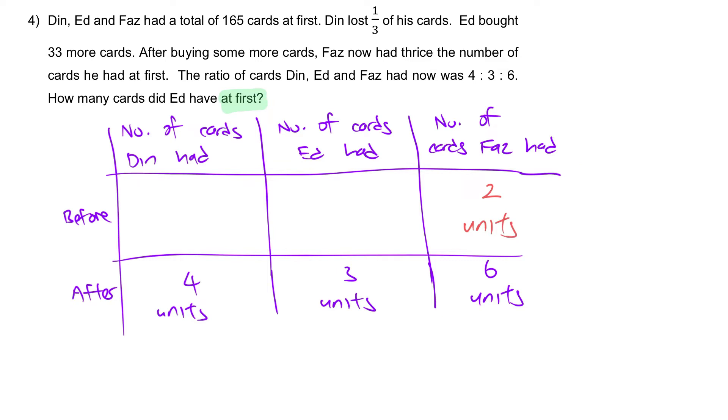Next, we're going to target Ed. Ed bought 33 more cards. So, from here, you're going to remove the 33 cards. So, it's 3 units minus 33.